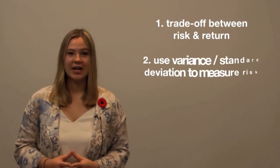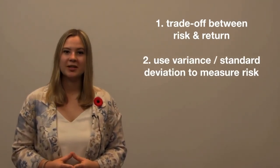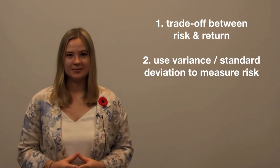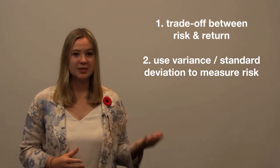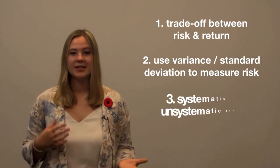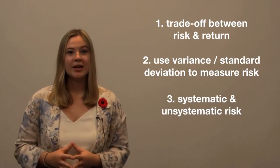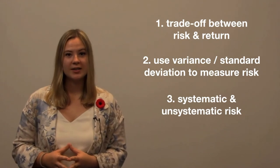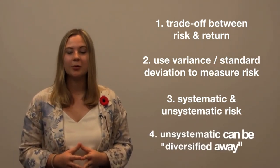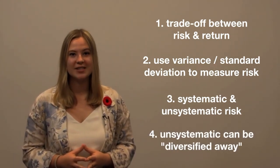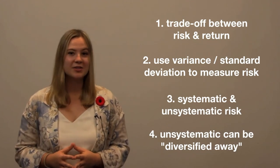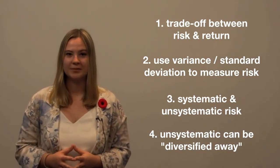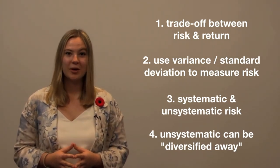Today, we learned about the trade-off between risk and return. Then we learned how to use the variance or standard deviation of returns to measure the risk of an asset. Later, we looked at the difference between systematic and unsystematic risk. Remember that unsystematic risk can be diversified away by holding a portfolio of assets with low correlation, so investors don't expect to be compensated for it. Thanks for watching!